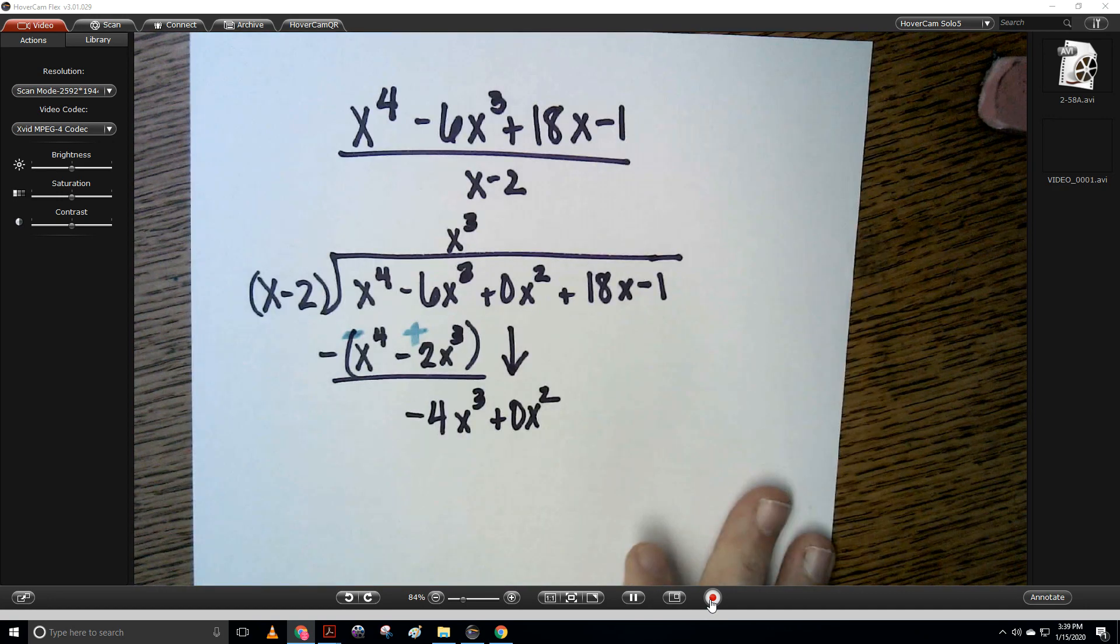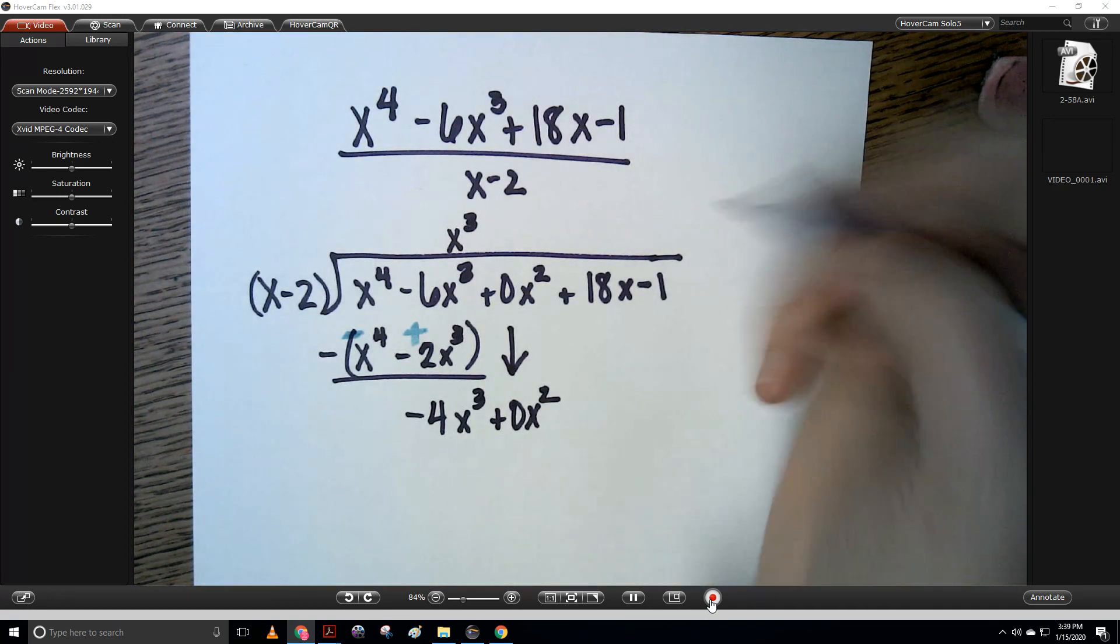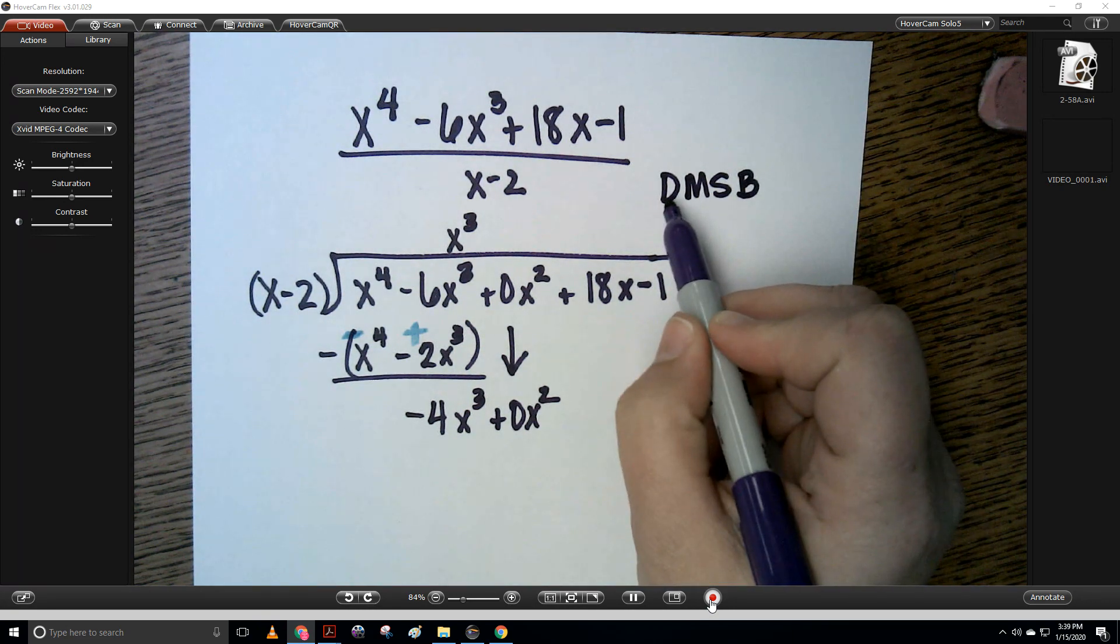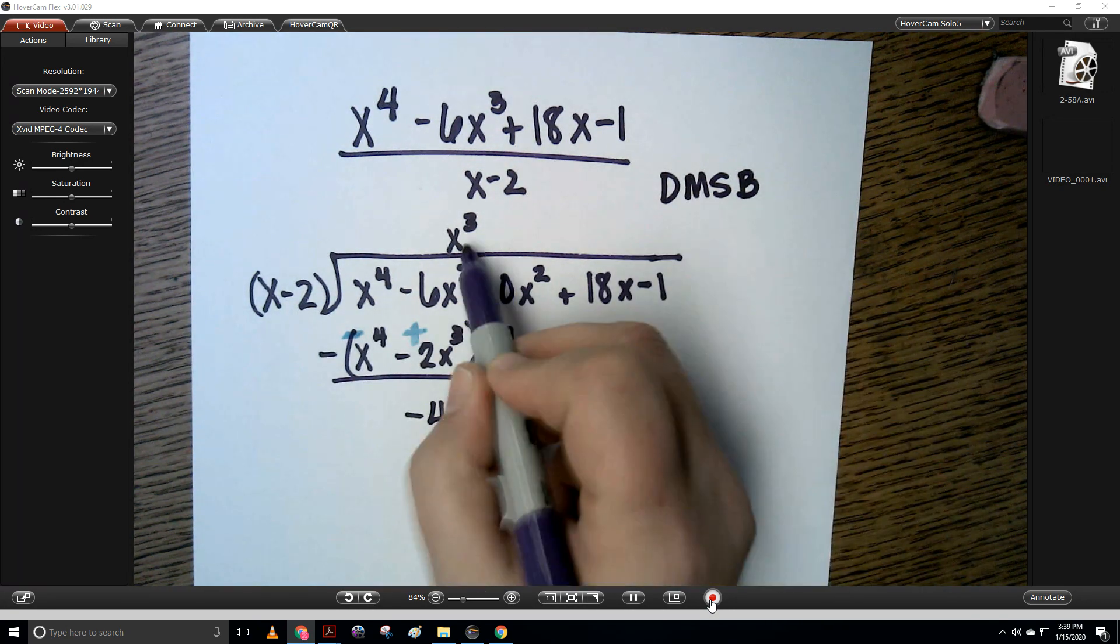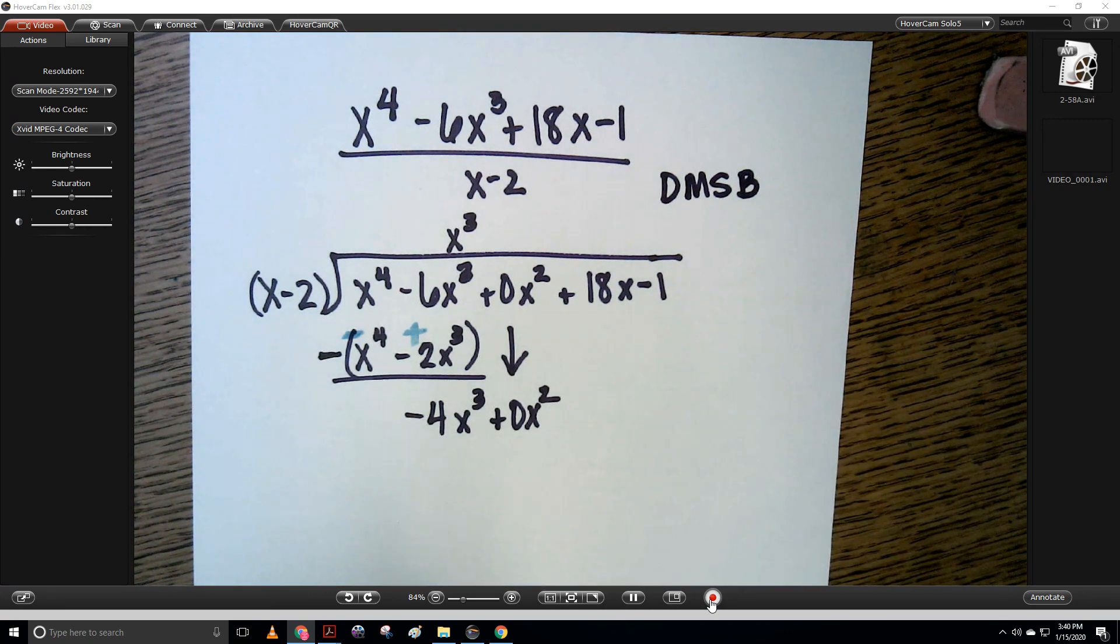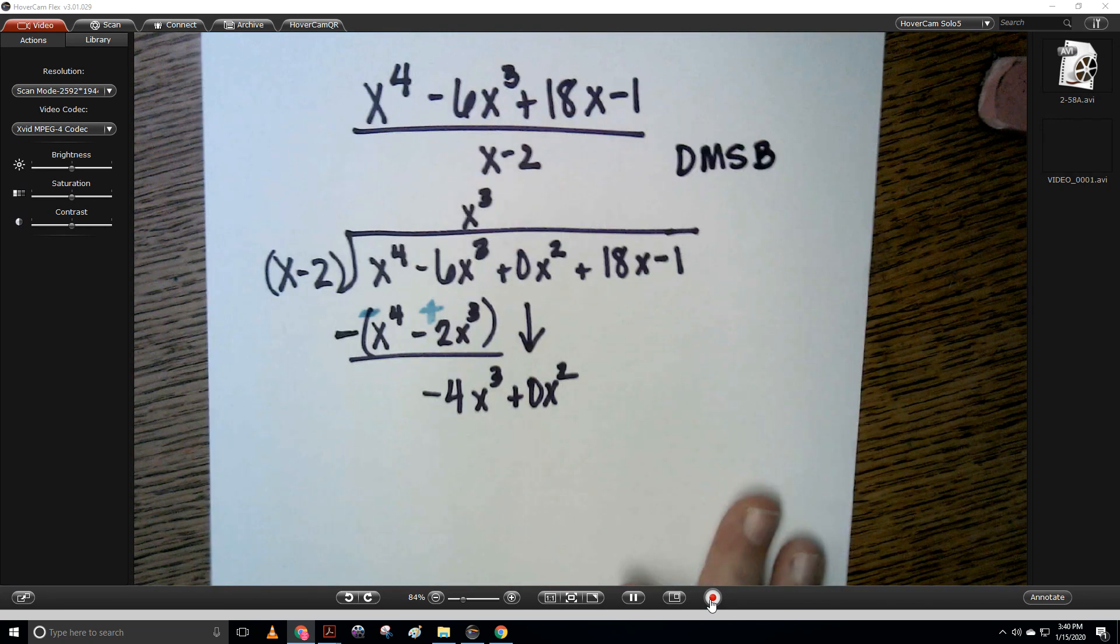So here's an acronym to help remember what we're going to do. It's called dirty monkeys smell bad. We're going to divide first term by first term, multiply, then subtract, and then bring down. Now we're just going to keep repeating that process.